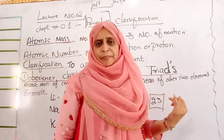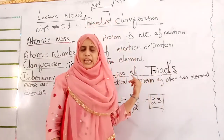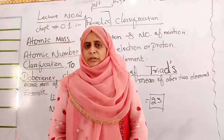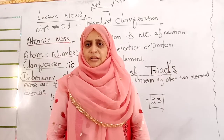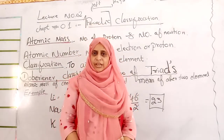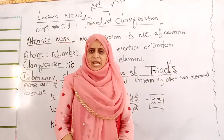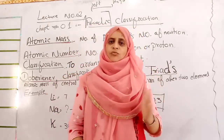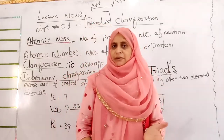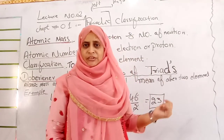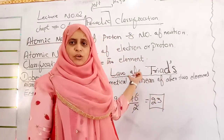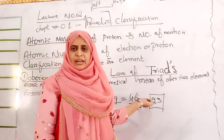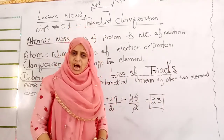All of these classifications depend on atomic mass. Basically, elements are classified into three groups. However, this classification was not successful because with the passage of time new elements were discovered, and arranging all elements into only three groups was not possible. So further classifications were formed.